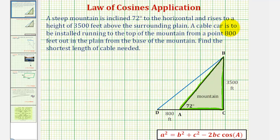A cable car is to be installed running to the top of the mountain from a point 800 feet out in the plane from the base of the mountain. So the length of side AD here would be 800 feet, so point D is where the cable car would start, and from here it runs to the top of the mountain at point B. So side BD represents the path of the cable car, and our goal is to find the shortest length of the cable needed, or the length of side BD.